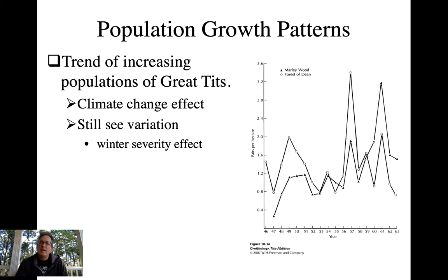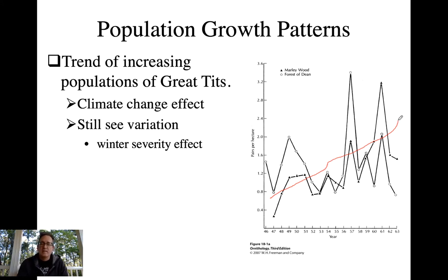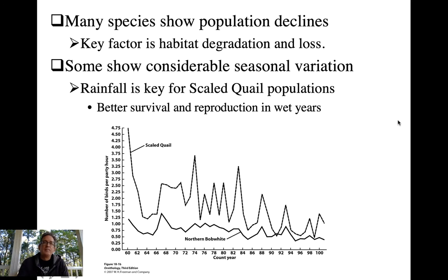The other pattern to notice is that if you look overall there is a general trend for increasing number of pairs per hectare. For this species this has been interpreted as being associated with climate change — warmer winters cause less overwinter mortality and preservation of a larger adult population.